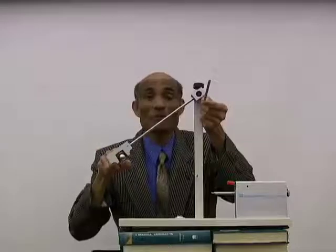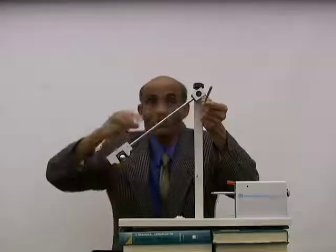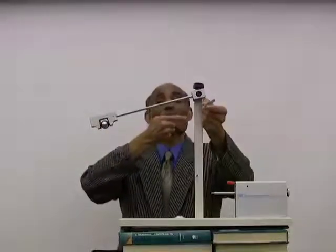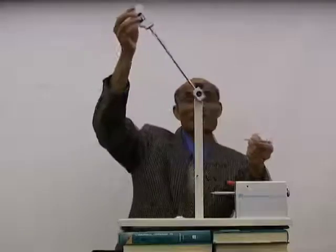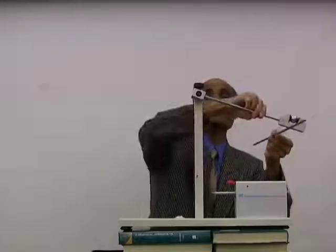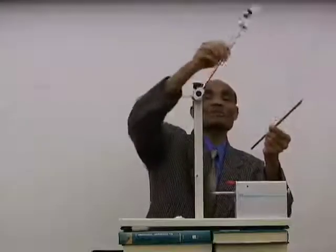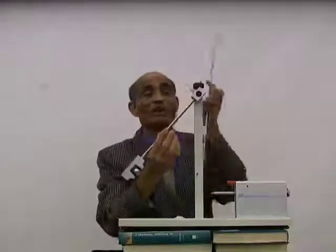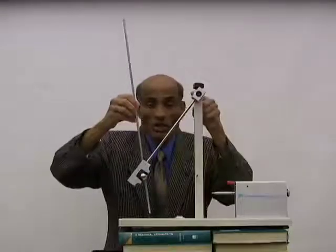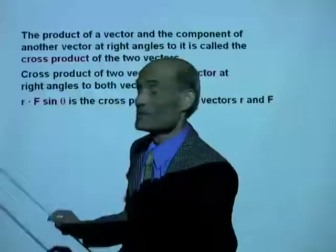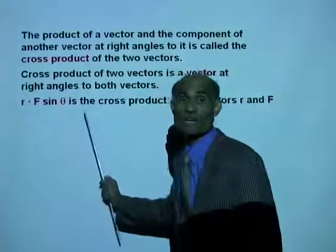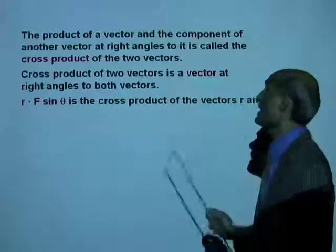It depends on the direction of the force. If the force is downward, the torque will be directed towards you. If the force is upward, the torque will be directed towards me. So when I rotate it like this, the torque will be directed towards me, whereas when I rotate it in the opposite direction, the torque will be directed towards you. The direction of the torque will be perpendicular to both the direction of the force and the direction of the torque arm. So R times F sine theta, which is the torque produced by the force, is the cross product of vectors R and F.